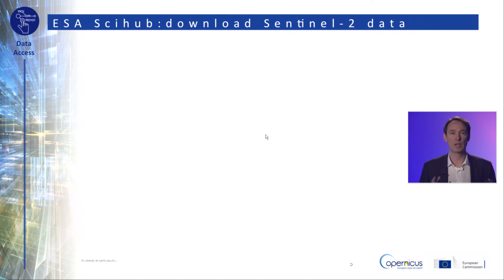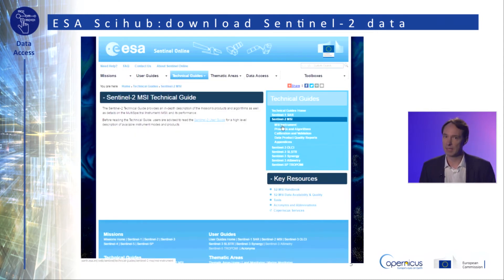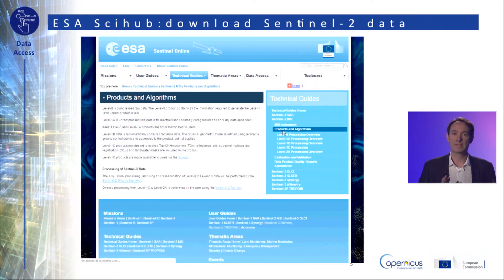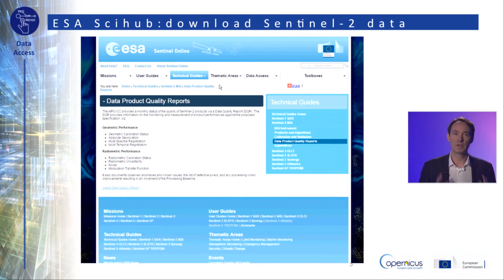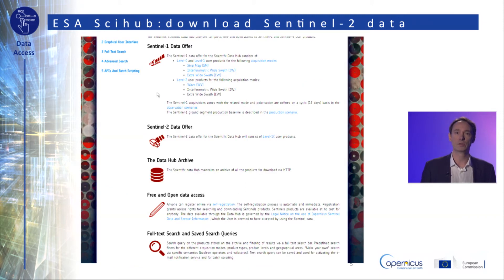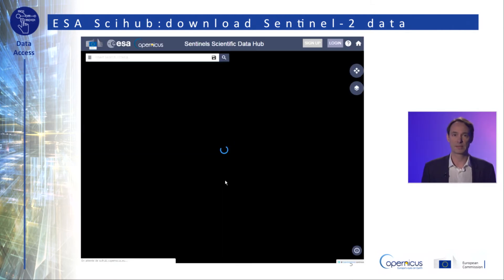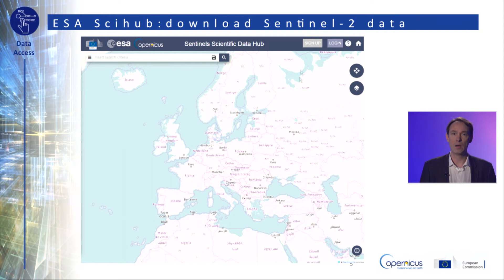But beside this generic information, the most interesting remains the data access navigator. I remind you that the basic principle of most of the Copernicus access points is that you can browse and discover the catalog, and you can even visualize the products without any registration. You will need to register only when you want to download the data. In this video, you can see that the registration process is a standard process.